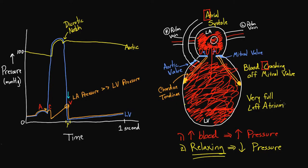The quick drop-off after the V wave is when the mitral valve opens. To summarize the three key features of the left atrium pressure wave: A is when there's atrial systole — a bump in pressure from muscle contraction. C is from blood crashing off the mitral valve due to the left ventricle squeezing and the valve snapping shut suddenly. V is the very full left atrium. The C wave is actually quite similar to the dicrotic notch — both involve blood crashing off a valve — but this is the left atrium pressure wave.